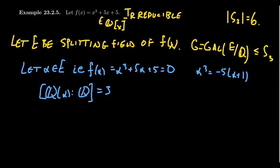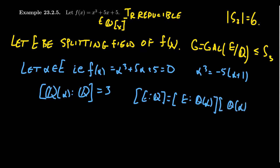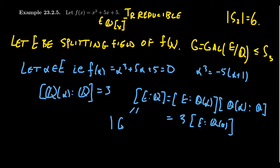Because we know this, we can do one better. Notice that [E:Q] factors as [E:Q(α)] · [Q(α):Q], so [E:Q] = 3 · [E:Q(α)]. We know this degree is divisible by three. Since E is a splitting field over the rational numbers, this is a Galois extension — over characteristic zero fields, normal and separable extensions coincide. So [E:Q] equals the order of our Galois group G, which means three divides the order of G, and G is contained inside S3.